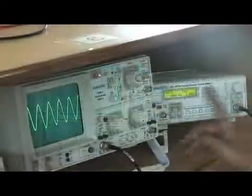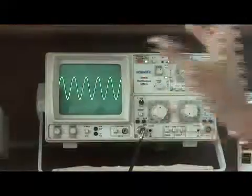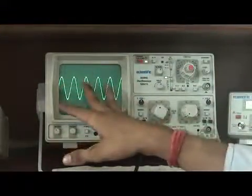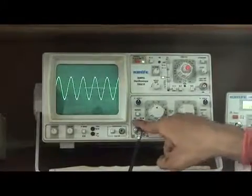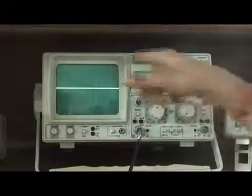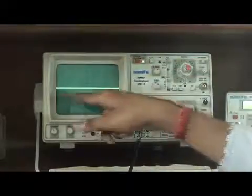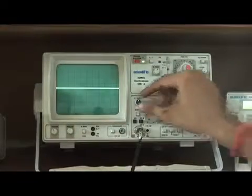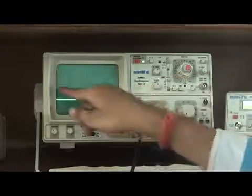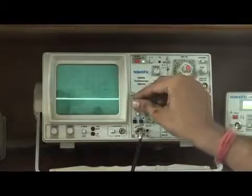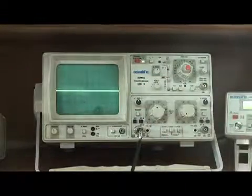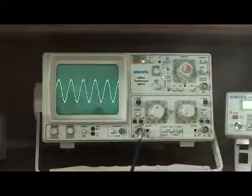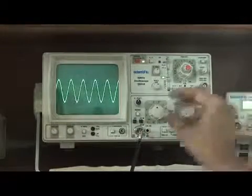Now whatever is being generated, we have to view here. You don't worry about what the signal has been seen here. First of all, use this point called GND. When you make it, it gives you a straight line. Now you have to set this straight line using this Y position movement to this center of the screen. That means here. I have set this in the center of the screen. Now I have to release the ground.